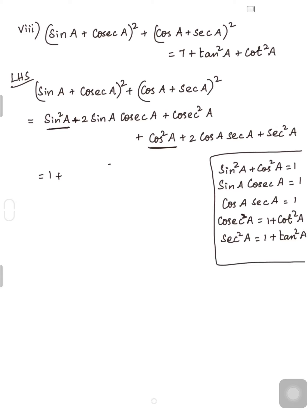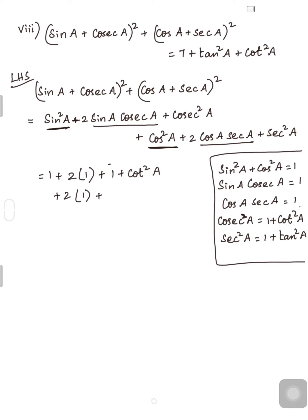Substituting: sin²A + cos²A = 1; 2·sinA·cosecA = 2·1 = 2; cosec²A = 1 + cot²A; 2·cosA·secA = 2·1 = 2; sec²A = 1 + tan²A. So the expression becomes 1 + 2 + (1 + cot²A) + 2 + (1 + tan²A).